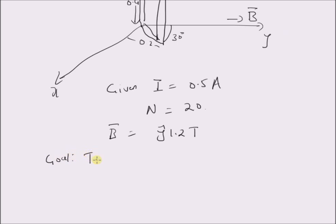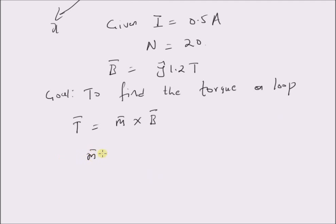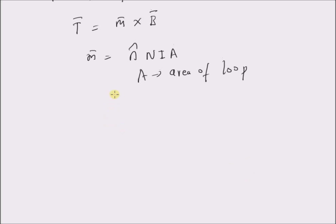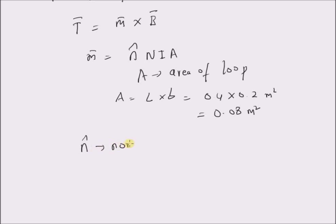Our goal is to find the torque on the loop and also find the direction of rotation of this loop. The torque is given by the magnetic moment m-bar cross product with the magnetic field B-bar. The magnetic moment m-bar is given by the normal vector n-cap multiplied by N times I times A, where N is the number of turns, I is the current, and A is the area of the loop. Since the loop is a rectangle, the area is length times breadth, which is 0.4 times 0.2 = 0.08 square meters. The only unknown is n-cap, the normal to the loop surface.